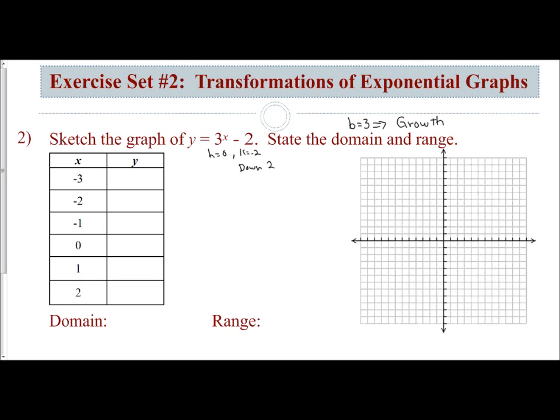Now the parent function of this graph is the equation y equals 3 to the x. So the parent function is going to be the same base, just no h or k. So if I take a look, I can graph this original one to see what my transformation would be. If I plug in, and I'm going to graph y equals 3 to the x, 0 for x, I'm going to get 3 to the 0, which is 1. So 0, 1 is a point.